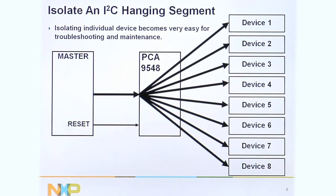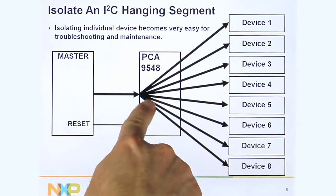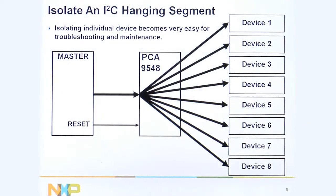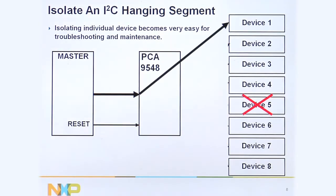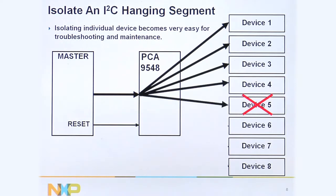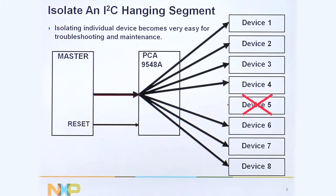It's also great for fault isolation. Here's the four or eight channel device, PCA9540A. The bus is working, but then you have a problem on device five and that's going to freeze up the whole bus. What you can do is reset the 9548A. The master comes out one bus at a time until it sees that device five is the one hanging up the bus. Then it can reset the 9548A again and just go out to the other devices. So the switches are excellent for fault isolation.